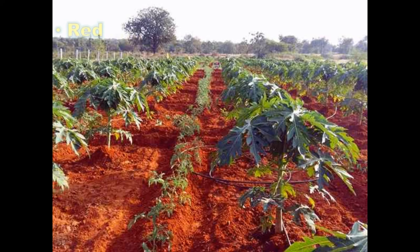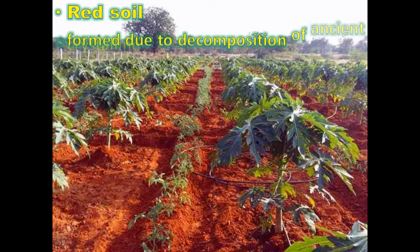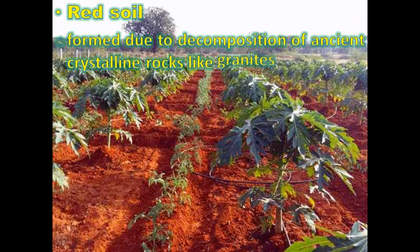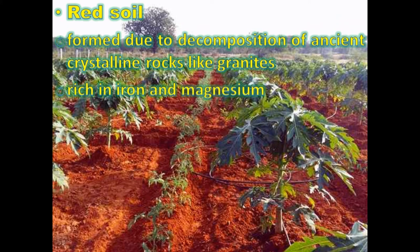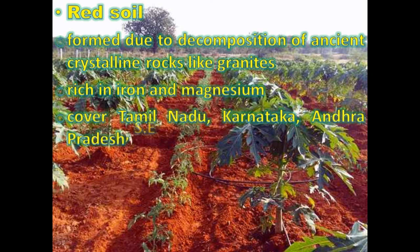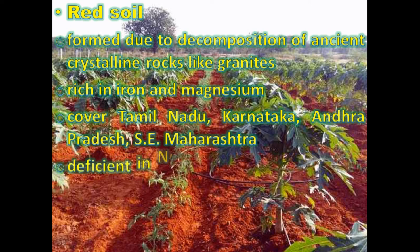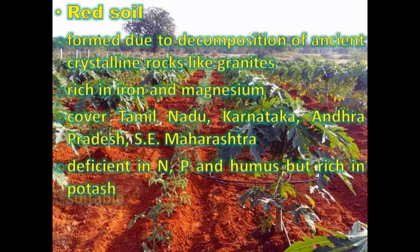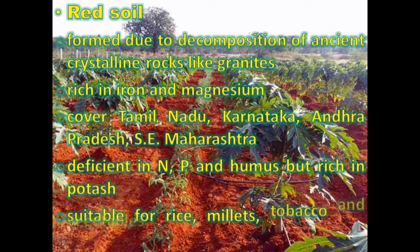Red soil is formed due to decomposition of ancient crystalline rocks like granites, rich in iron and magnesium. It covers areas like Tamil Nadu, Karnataka, Andhra Pradesh, and Southeast Maharashtra. It is deficient in nitrogen, phosphorus, and humus but rich in potash, and is suitable for rice, millets, tobacco, and vegetables.